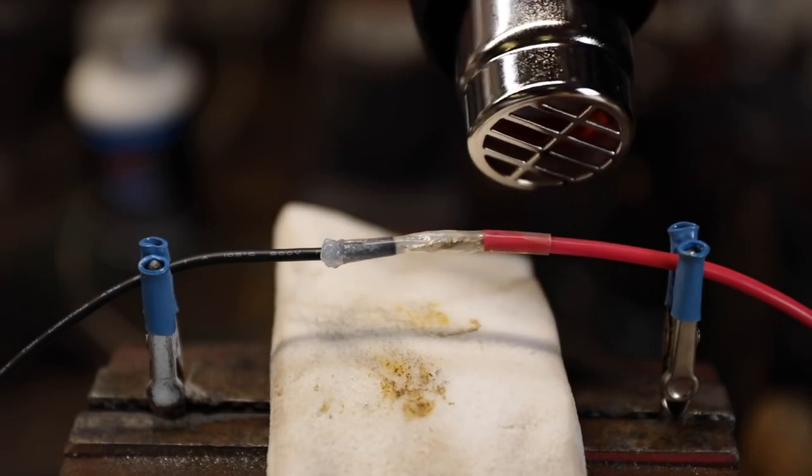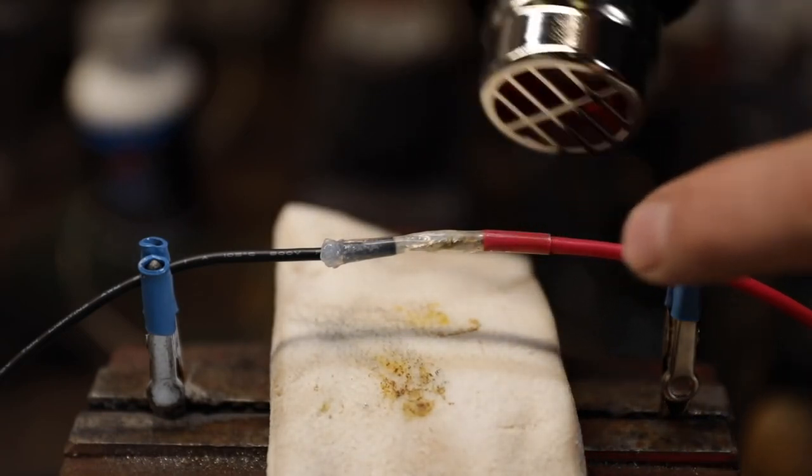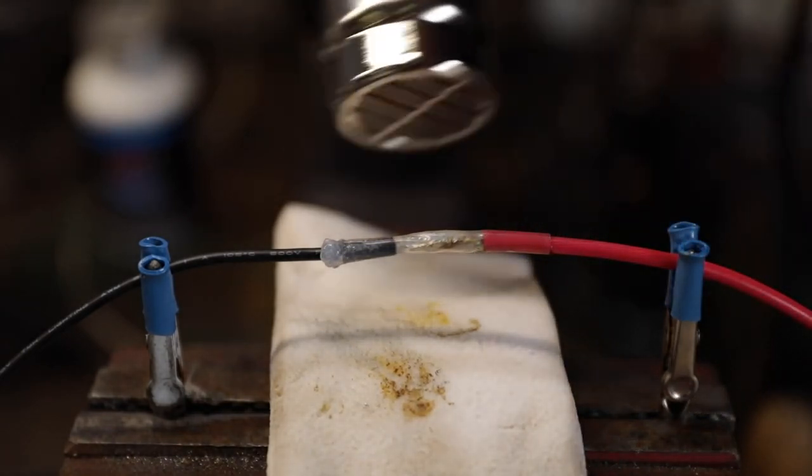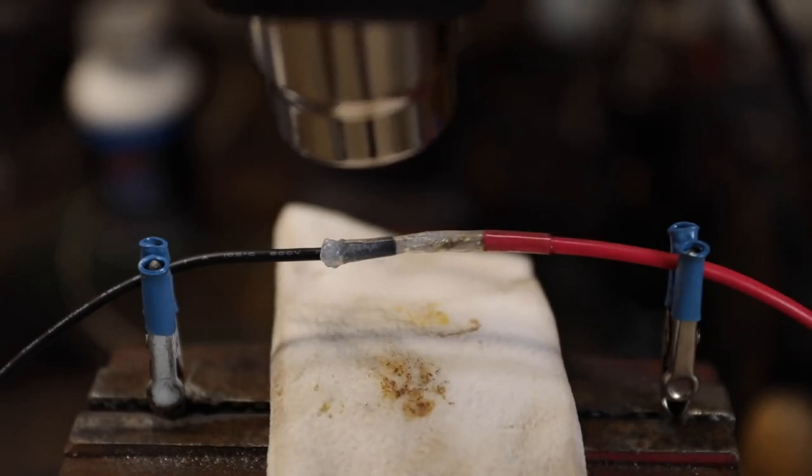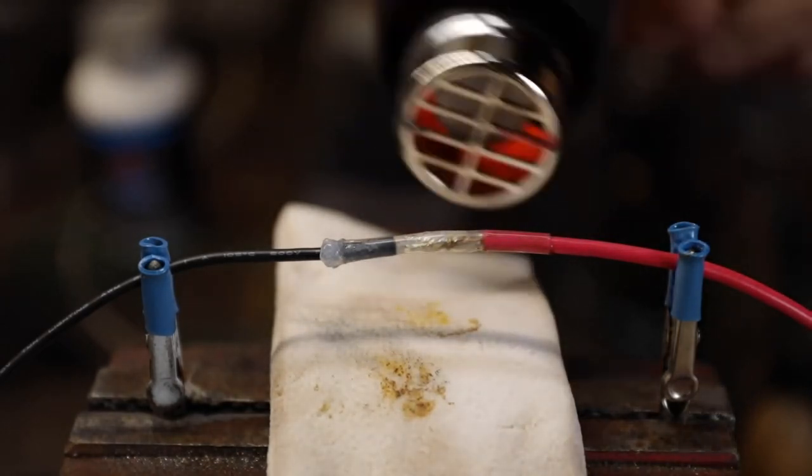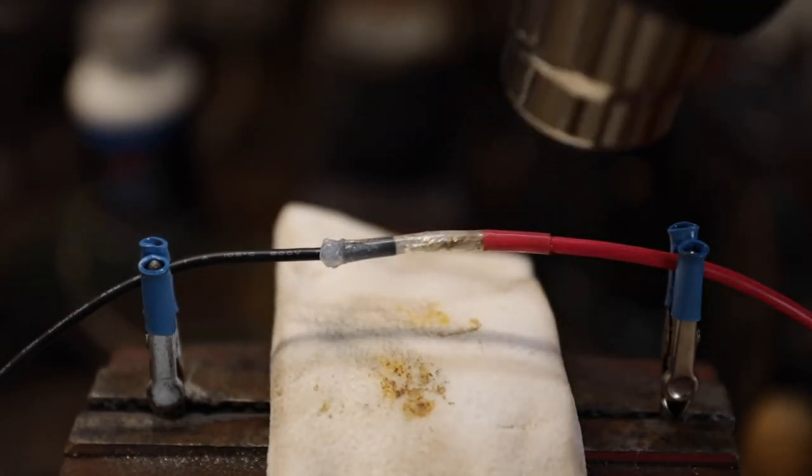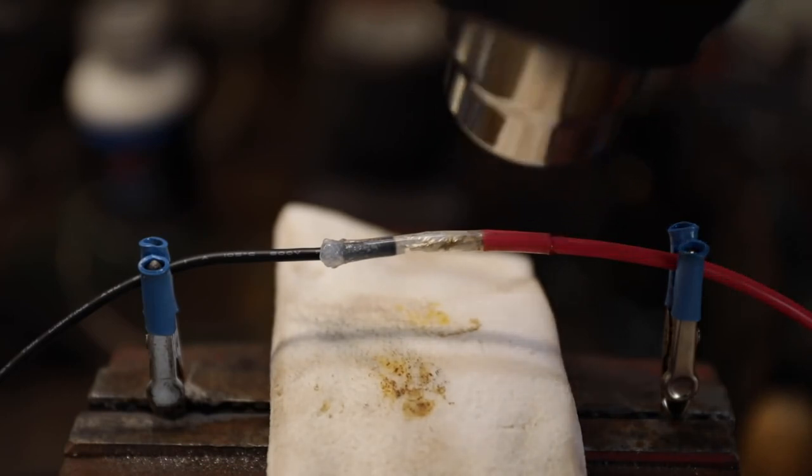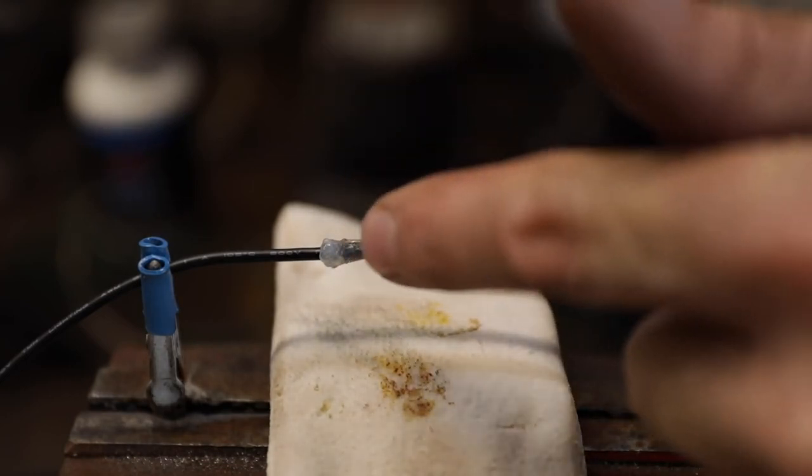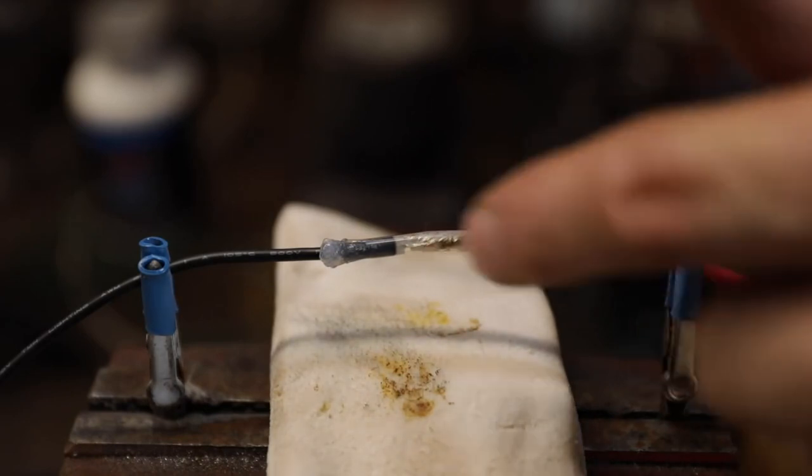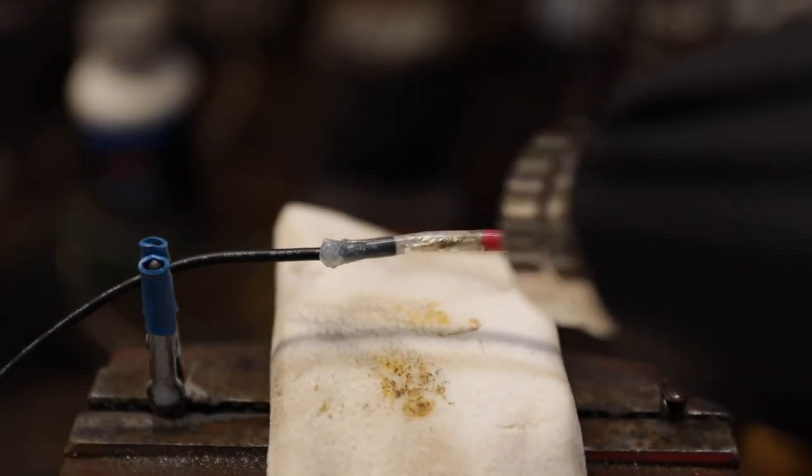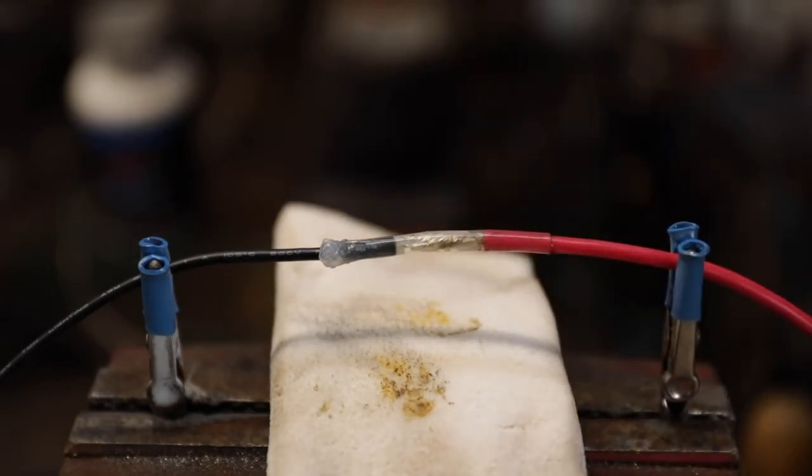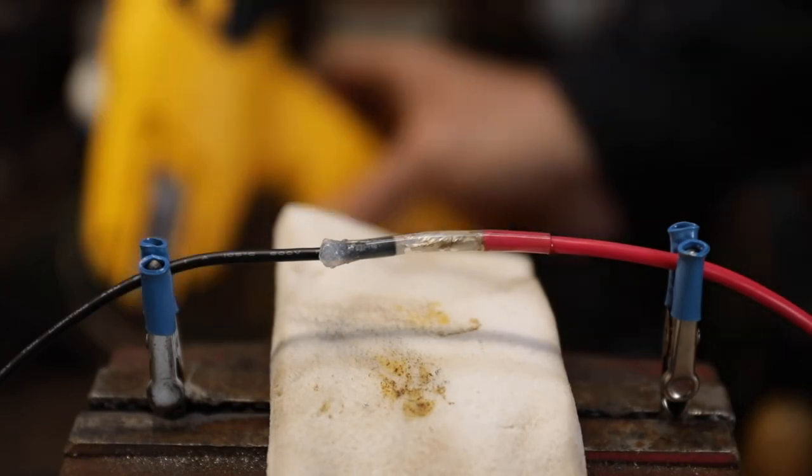You'll see that silicone making that seal as the shrink tape tightens around the connection. Ideally you want it to squeeze out like that side right there. Probably should have put a little bit more on the housing but that looks pretty good right there actually.